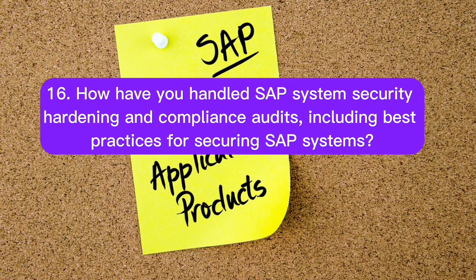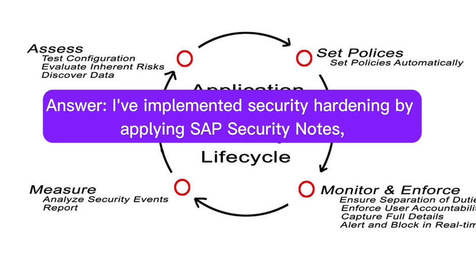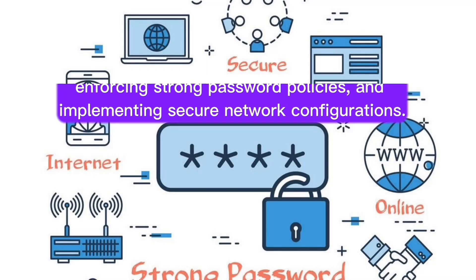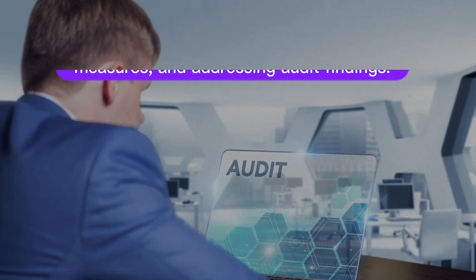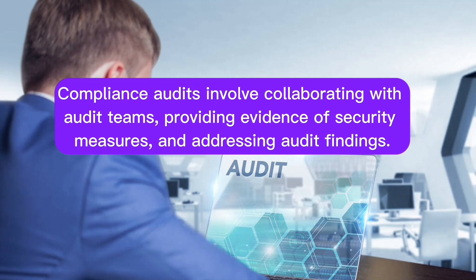Question 16: How have you handled SAP system security hardening and compliance audits, including best practices for securing SAP systems? Answer: I've implemented security hardening by applying SAP security notes, enforcing strong password policies, and implementing secure network configurations. Compliance audits involve collaborating with audit teams, providing evidence of security measures, and addressing audit findings.